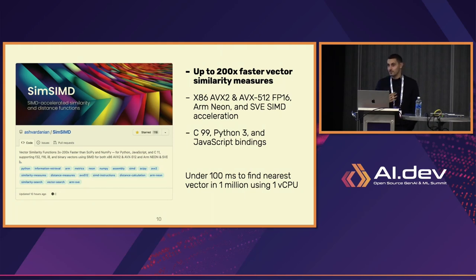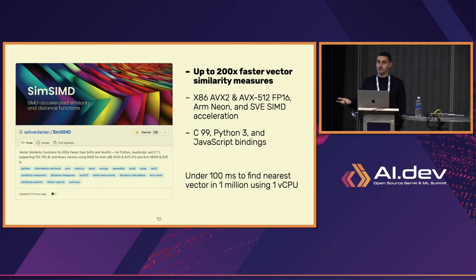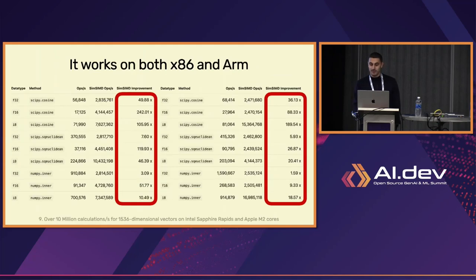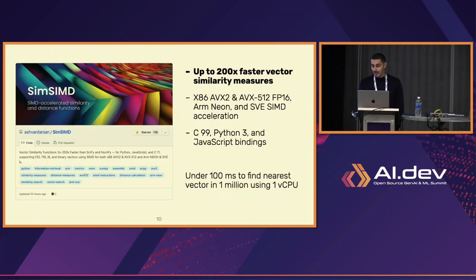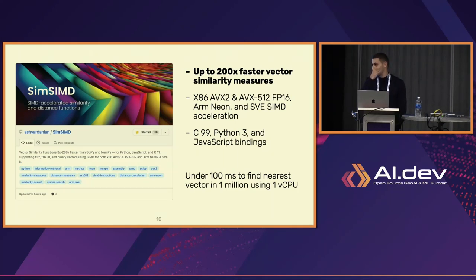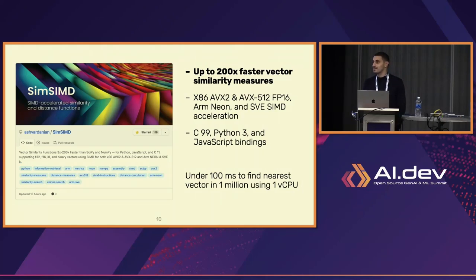Most likely you're already using it without knowing, because some big cloud providers rely on those libraries. The same applies to databases. If you have 1 million vectors, SimSIM is capable of doing up to 17 million operations per second. That means it would take roughly 70 milliseconds to compute all distances on one CPU core — and most CPUs have far more than one core. So the latency of computing against the entire dataset will likely be lower than a network call to a vector database.